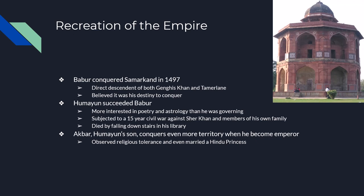Babur's son Humayun takes control of the empire. Humayun is interested in poetry and astrology, and he built a giant library called the Sher Mendel — that's what this picture shows. While Humayun is in charge, he faces a revolt from an Afghan leader named Sher Khan, who was able to unite parts of Humayun's own family against him. The civil war ends up lasting over 15 years.